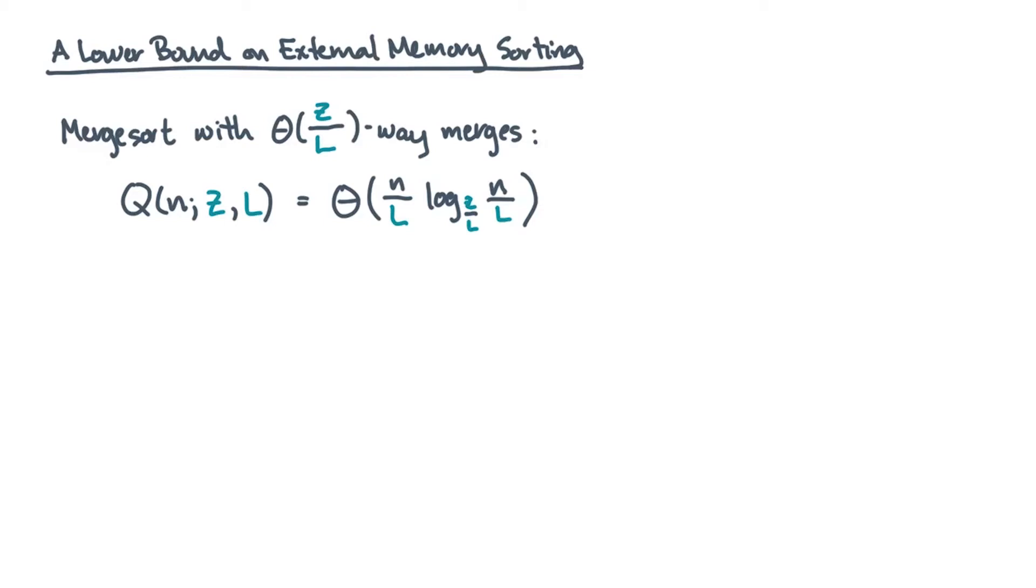A merge sort based on multi-way merging has a memory transfer complexity of n over l log base z over l of n over l. So is that good or bad?